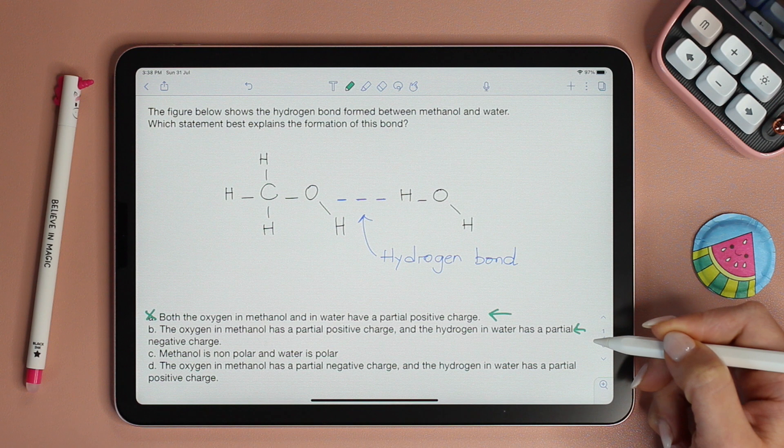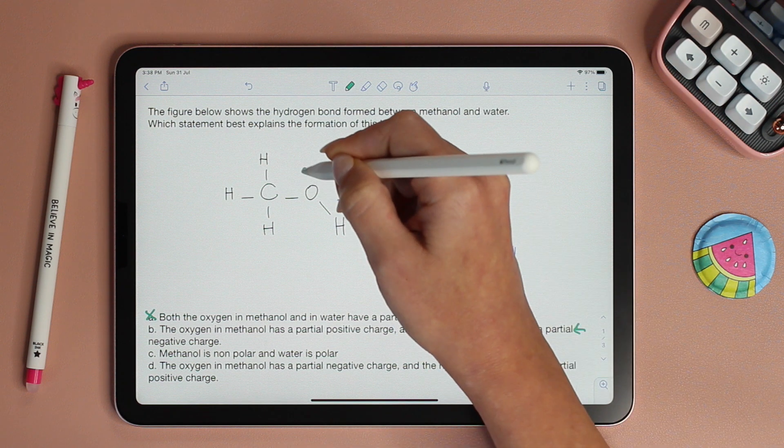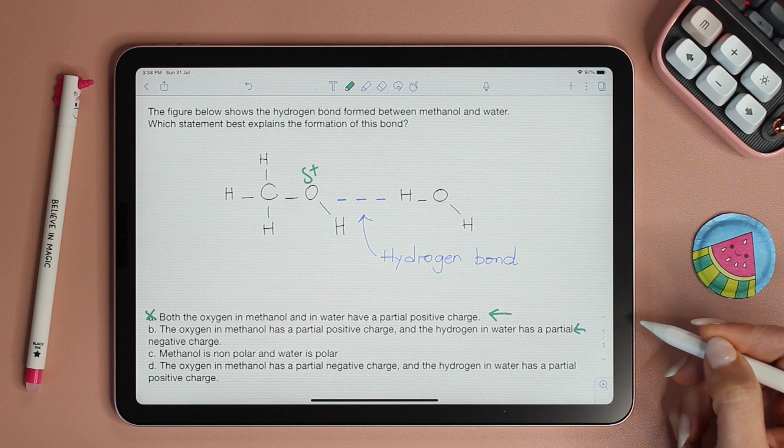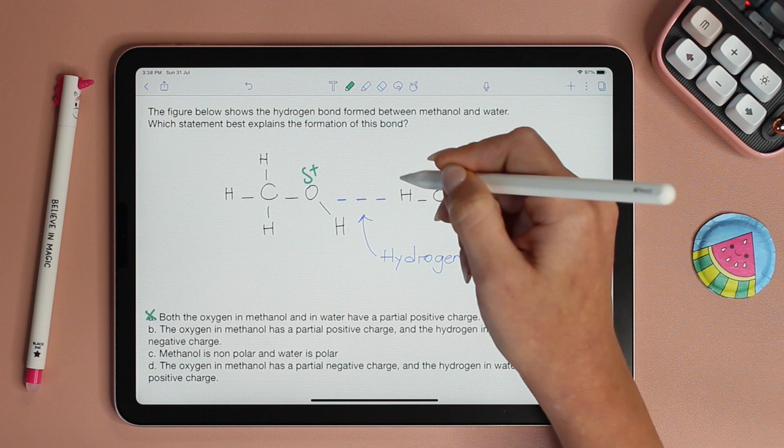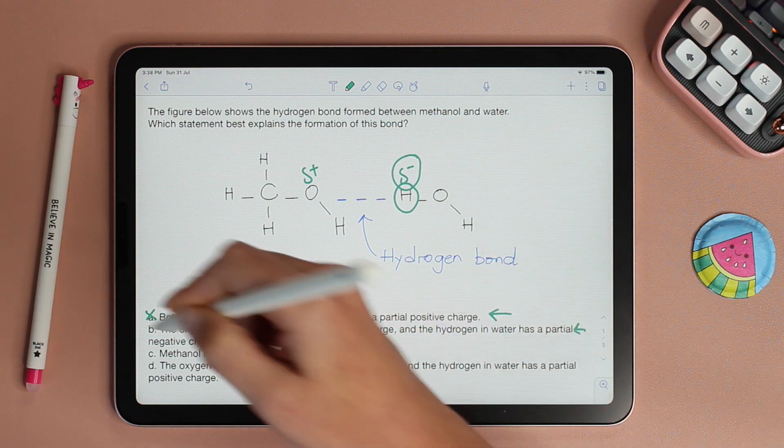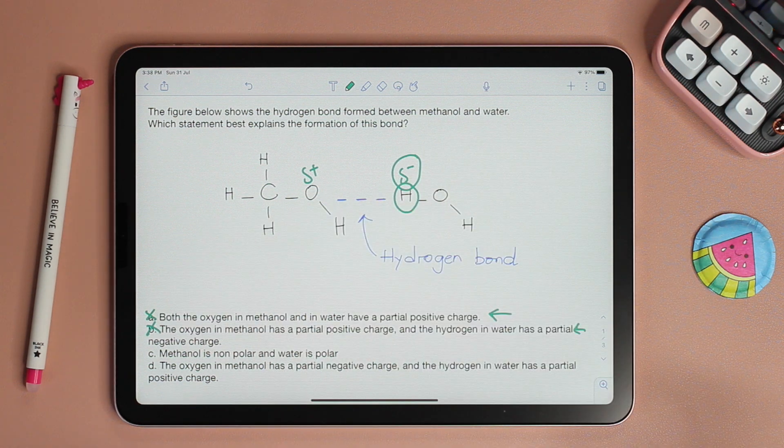Now let's look at choice B. The oxygen in methanol has a partial positive charge. So it says that this has a partial positive charge. And the hydrogen in water has a partial negative charge. Again, the hydrogen is not partially negative. So B cannot be the right choice.